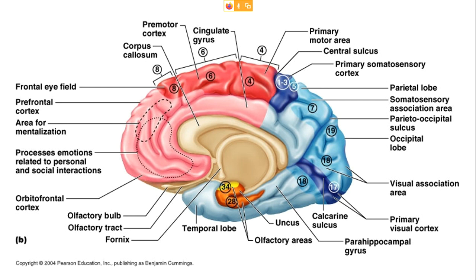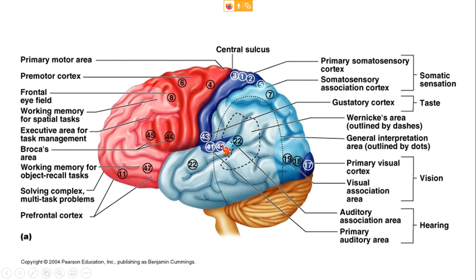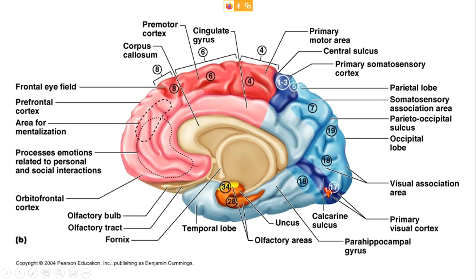Areas 18 and 19 form the secondary visual area, surrounding the primary visual area and occupying most of the remaining visual cortex on the medial and middle surface. This area receives afferent fibers from the primary visual area and relates visual information received to past visual experiences — similar to how area 22 works for auditory information.